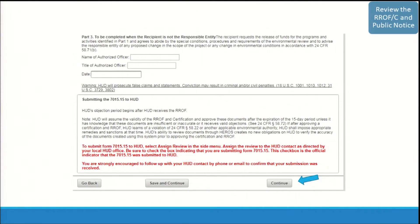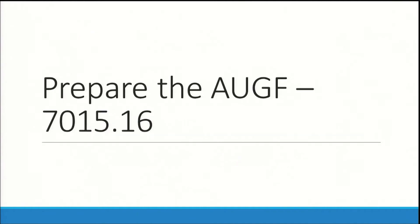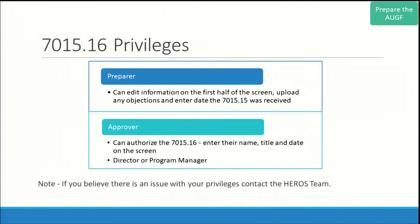Once you have finished your review of the 7015-15, click continue to access the 7015-16 screen. There are two different privileges for HUD users on the 7015-16 screen: those that can prepare the screen — they can upload any objections and select the date the 7015-15 was submitted — and those who can approve the screen — they can authorize the screen, enter their name, title, and date, and this is usually a director or program manager. If you believe there is an issue with your privileges on the 7015-16 screen, please reach out to the HEROES team.